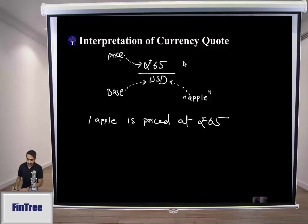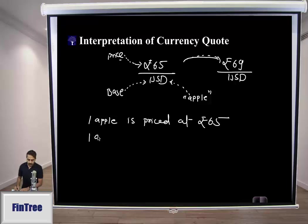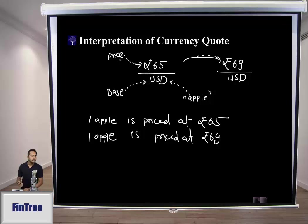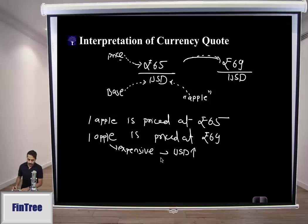If that quote becomes 69 Indian rupees for a US dollar, then one apple is now priced at 69. Has the apple become cheaper or more expensive? The apple has become expensive, so we say the US dollar has appreciated and consequently the Indian rupee has depreciated. Start thinking of the base currency as a commodity — that will help you crystallize your thinking.